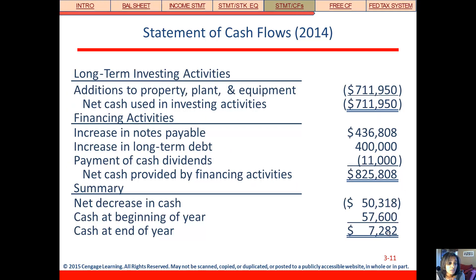The second and third sections are long-term investing and financing. With investing, we're showing how cash was spent on property, plant, and equipment. They spent quite a bit — remember, they were going through an expansion — spending over $700,000 on property, plant, and equipment.